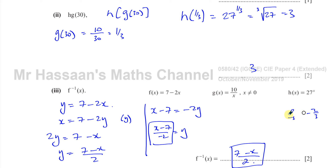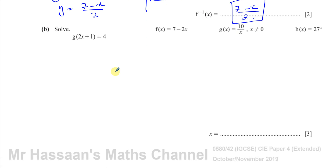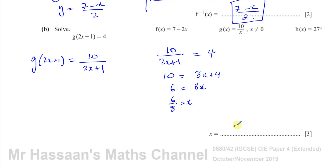Part B says solve the equation g(2x + 1) = 4. We take function g and replace the x with 2x + 1, giving 10 over (2x + 1) = 4. Multiplying both sides by (2x + 1) gives 10 = 8x + 4. So 6 = 8x, divide both sides by 8, and x equals 6/8, which simplifies to 3/4.